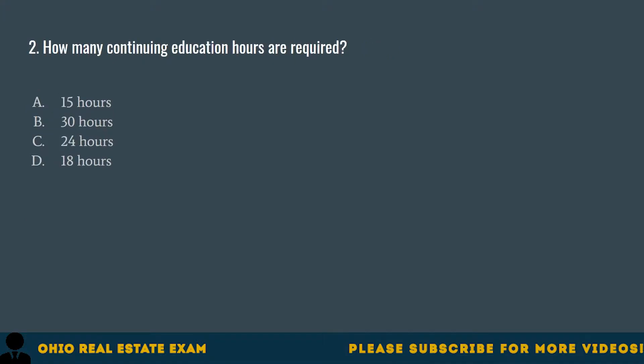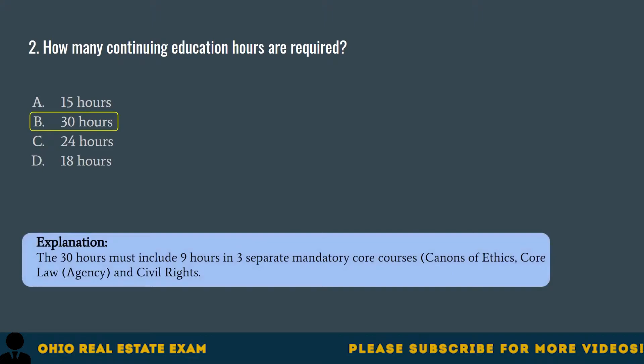Question 2. How many continuing education hours are required? A. 15 hours. B. 30 hours. C. 24 hours. D. 18 hours. The correct answer is B. 30 hours. The 30 hours must include nine hours in three separate mandatory core courses: canons of ethics, core law, agency, and civil rights.